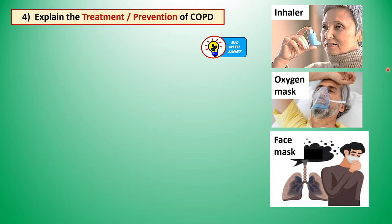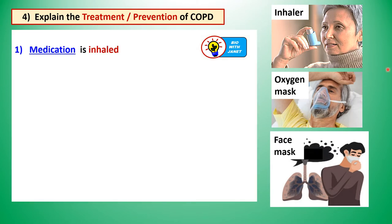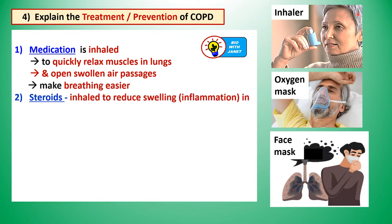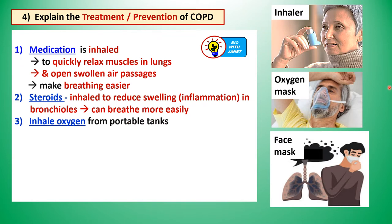For treatment or prevention of COPD, medication is inhaled to quickly relax the muscles in the lungs and open up the swollen air passages. For asthma, the contracted muscles will relax after inhaling medication, opening the air passages. The medication is inhaled using an inhaler placed in the mouth. Secondly, steroids can also be inhaled using the inhaler to reduce inflammation or swelling in the bronchioles, causing the airways to become wider, making breathing easier.